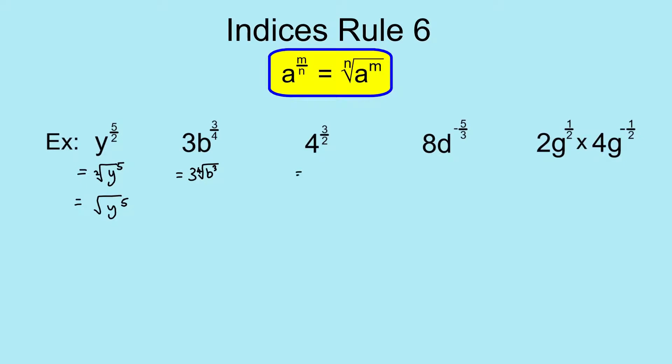Moving on to the third example, we've got a purely numerical example here. So again, we're going to write it out the same way. So it's 4, top number is your power. That's 3, so 4 cubed. And the bottom number is your root. So it's the second root, which is the square root. So it's just the square root of 4 cubed.